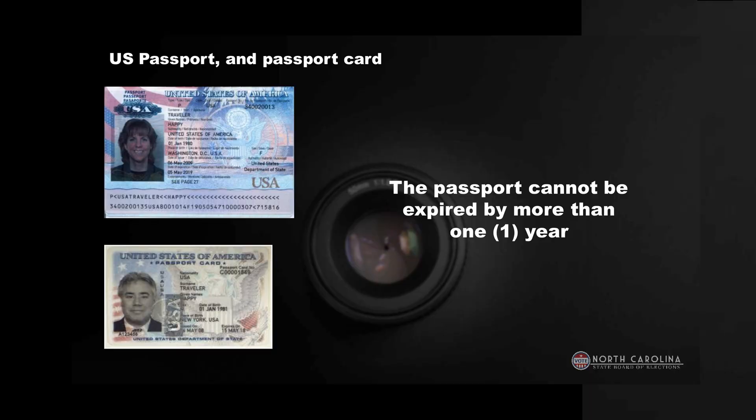Along with the driver's license is the state ID card. People who are non-operators will have an ID but don't use it for driving. Then you have the passport — passports can be used for voting, and they can be expired for more than a year. Passport cards are also accepted; some people choose to get a passport card instead of the book, and that's treated the same way.